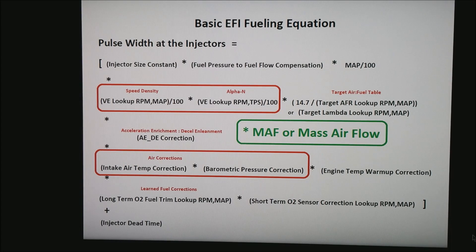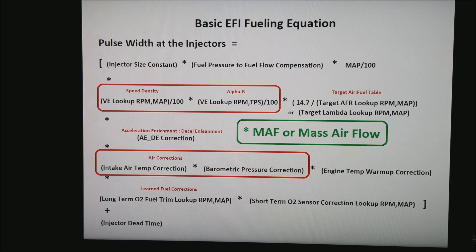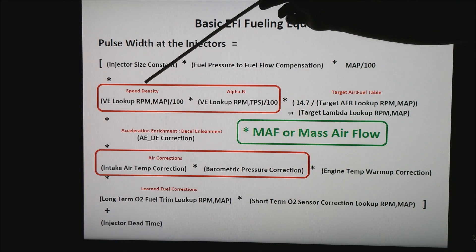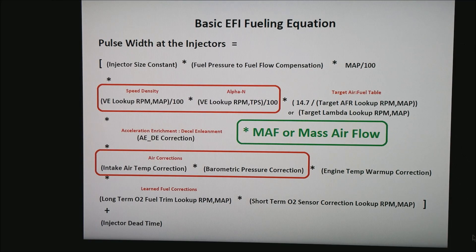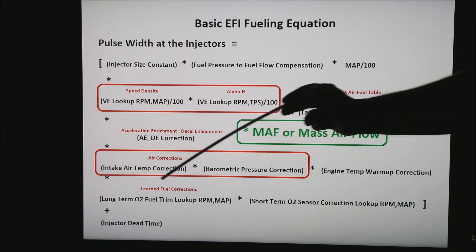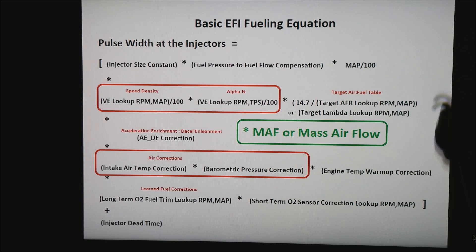Now let's talk a little bit about mass airflow. The things I've highlighted in red generally go away when you have a mass airflow sensor in the system. You no longer have to calculate air density based on speed density or alpha-N, nor do you have to worry about intake air temperature or barometric pressure — that's all built into your mass airflow sensor.